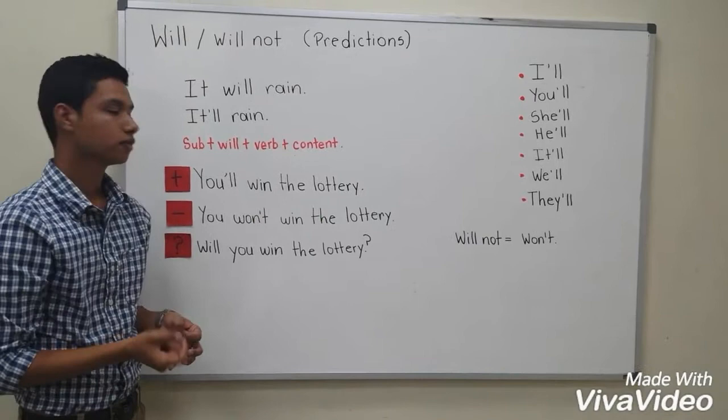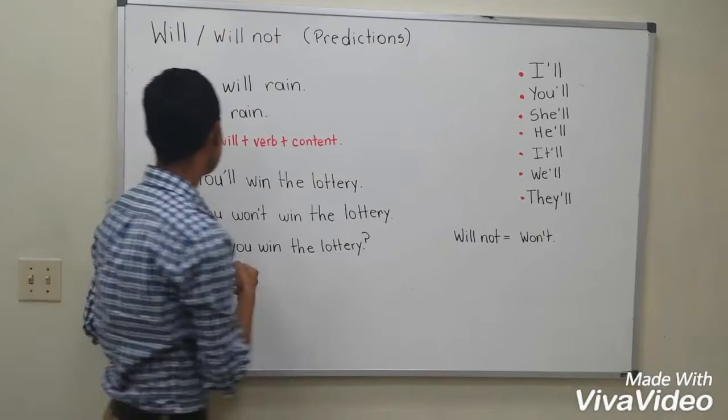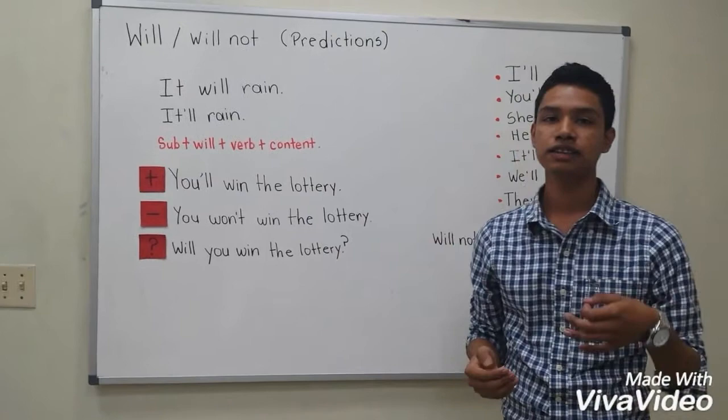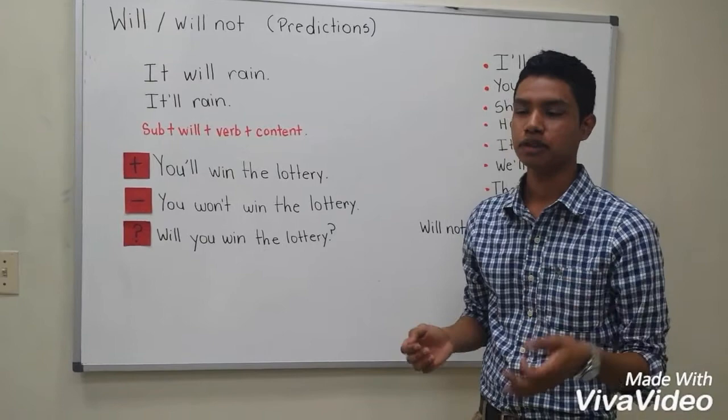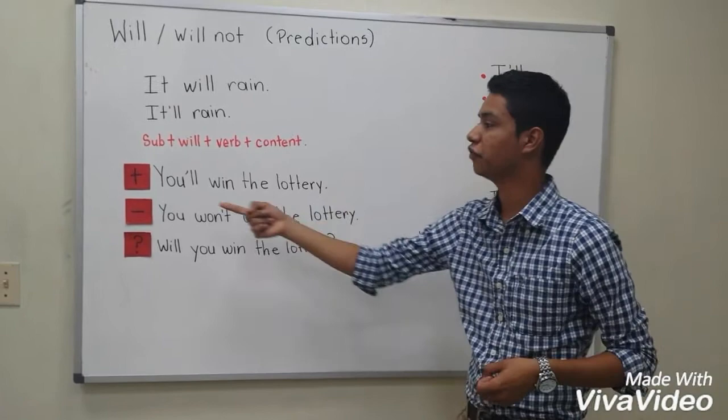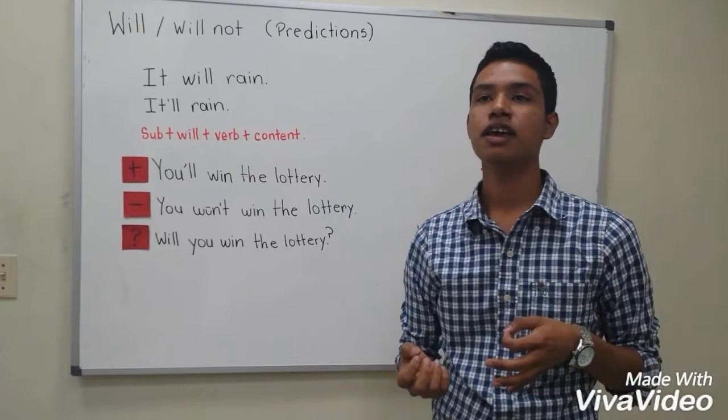Over here I have other examples. If you want to say, for example, one friend comes to you and tells you, hey, I bought the lottery, and you tell him, hey, you will win the lottery — here we have: you'll win the lottery. This is an affirmative sentence.